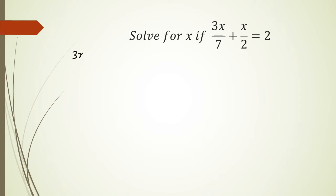So we have 3x over 7 plus x over 2 equals 2. Now remember what I talked about in the previous videos, that you can't actually cross multiply if you have two fractions on the left hand side. You've got to have one fraction equals another fraction or a number to cross multiply.